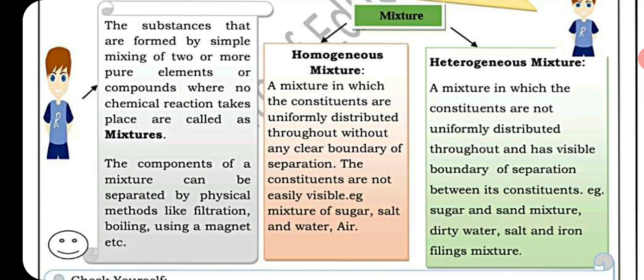For example, if we dissolve sugar in water, you will not be able to see the sugar separately — it will all look the same. A heterogeneous mixture, on the other hand, is one in which the constituents are not uniformly distributed throughout, and there are visible boundaries of separation between the constituents.